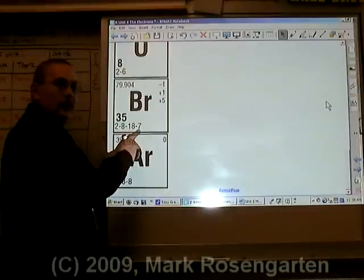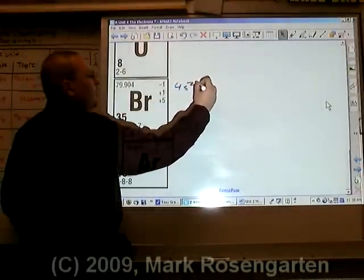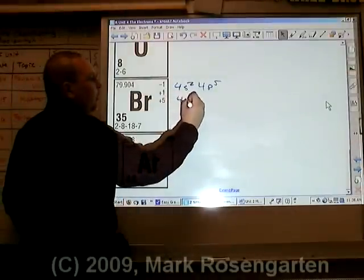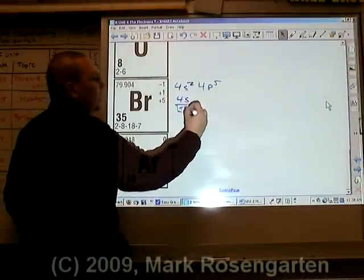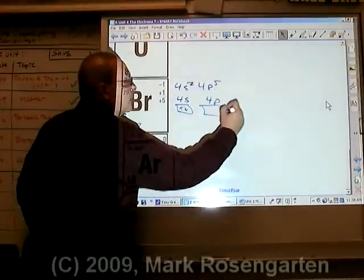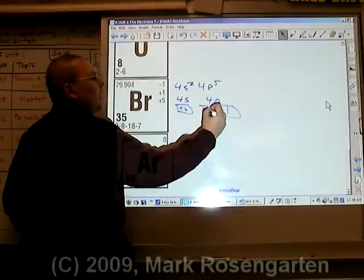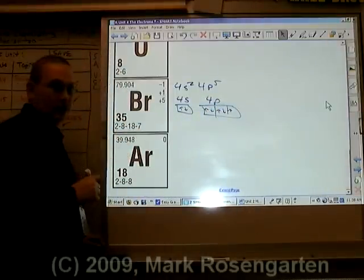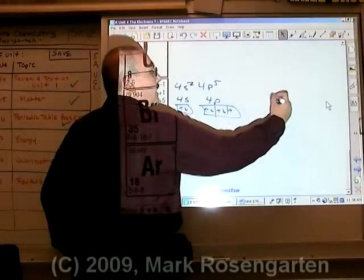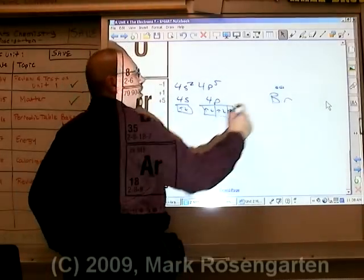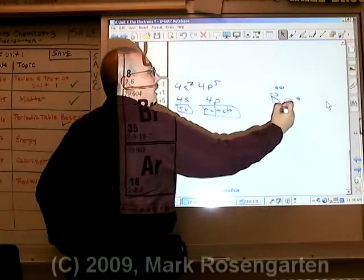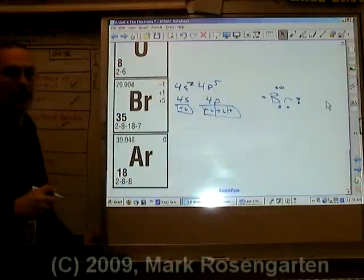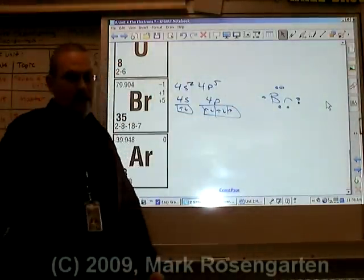Bromine has seven valence electrons: 4s2, 4p5, which adds up to seven. The 4s electrons are up and down. The 4p5 electrons fill up, up, up, then down, down — meaning there is only one unpaired electron. The dot diagram shows the 4s electrons together, then three pairs and one unpaired electron. Because it has only one unpaired electron, bromine can form a single covalent bond.